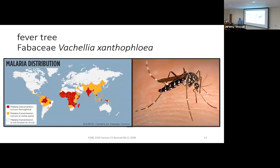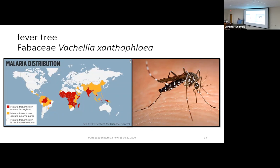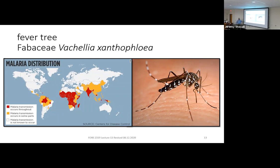Why is it called Fever Tree? We talked about quinine and malaria last class. When European explorers first explored Africa, they started getting malaria with no idea what was causing it. They got sick more in swampy areas, and these trees grow on wetter sites in an otherwise arid climate. So they thought the tree was causing their symptoms — giving it the English common name Fever Tree. Of course, they later figured out it's the mosquitoes in wet areas that are the vector, not the trees.